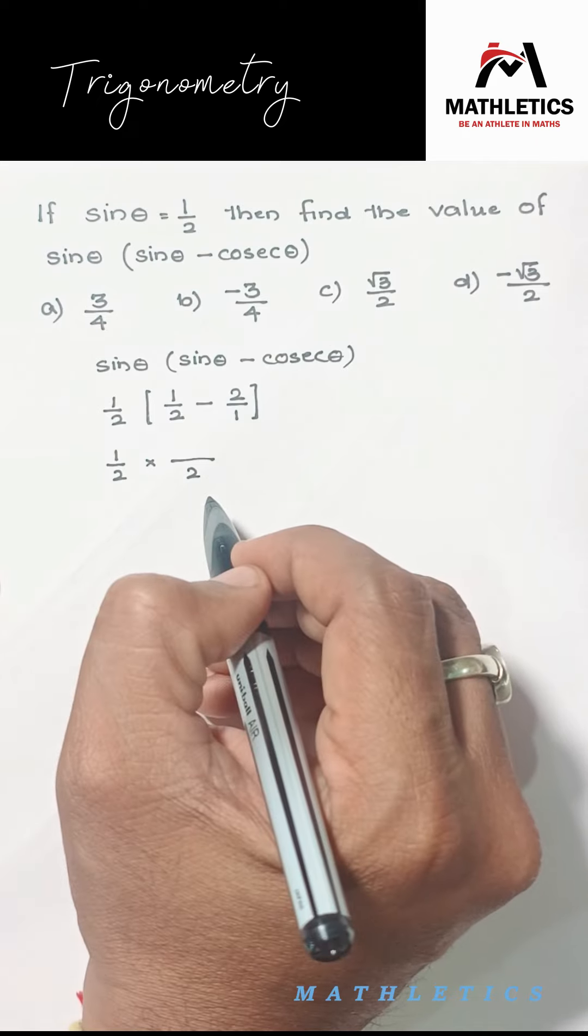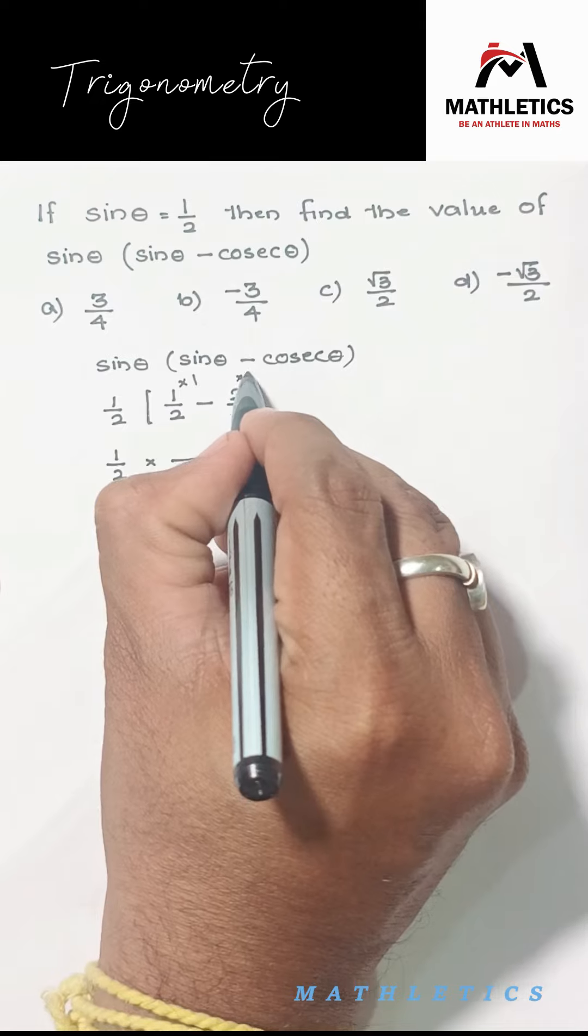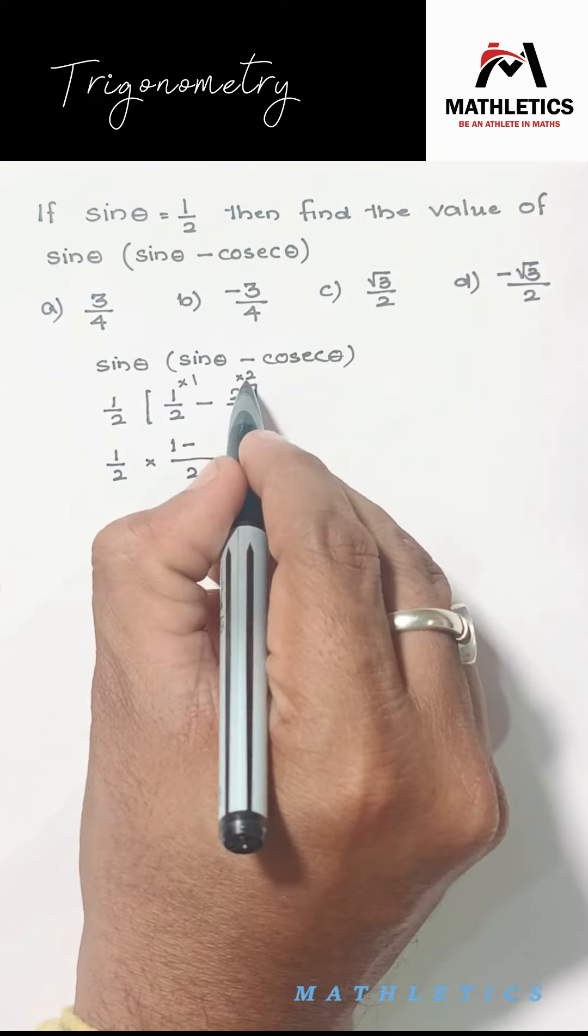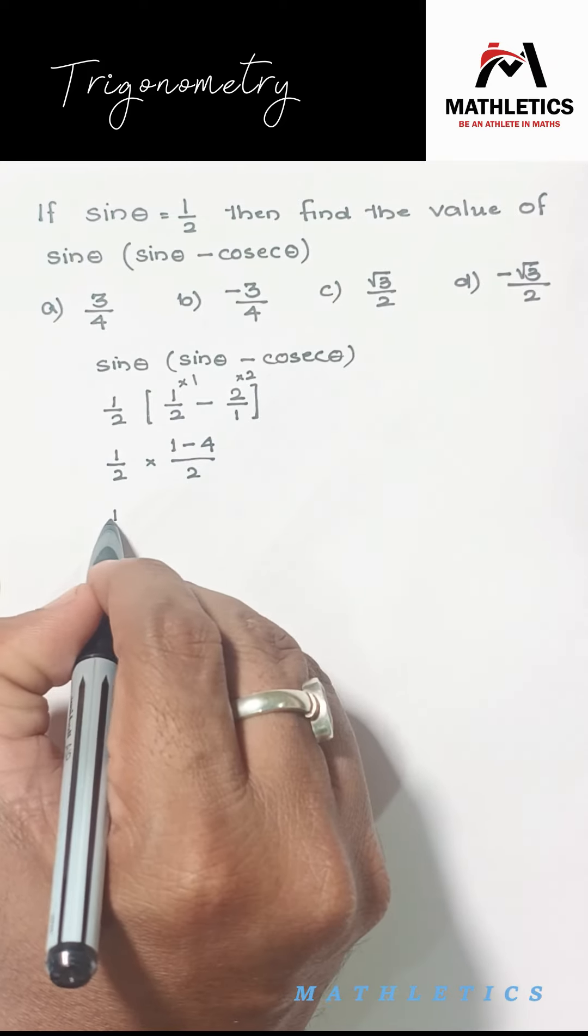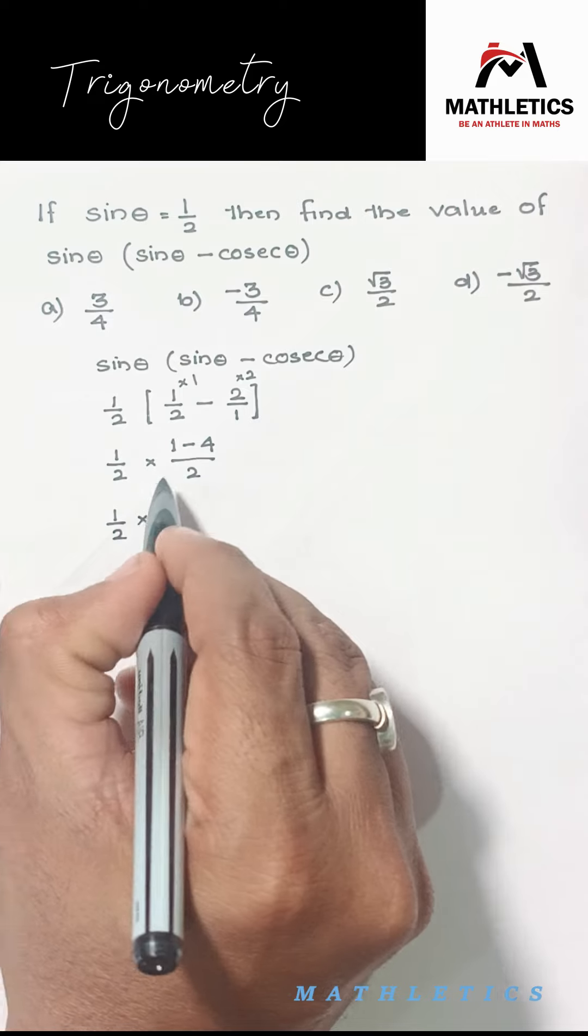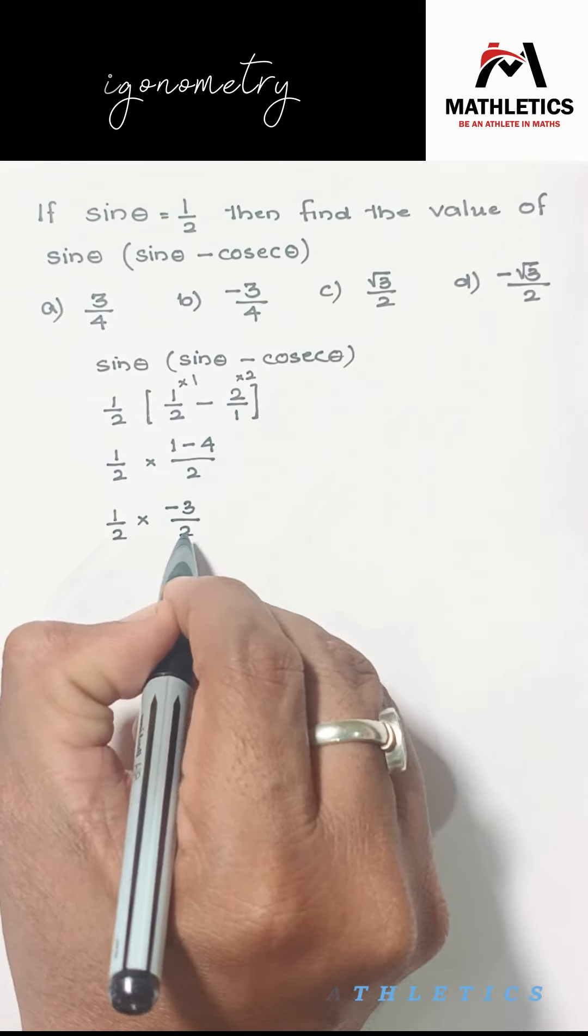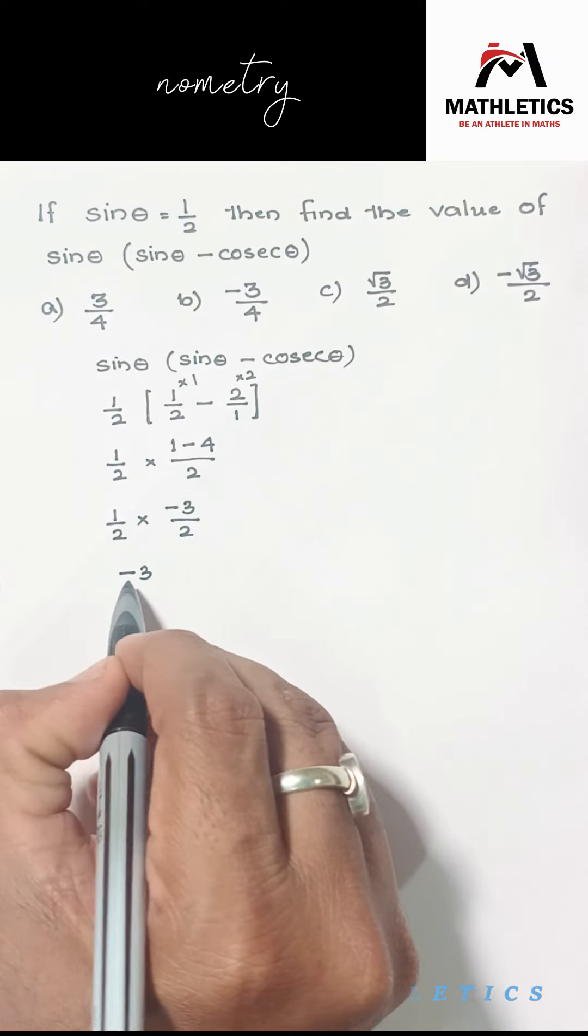Here I can write: two ones are 2, one twos are 2. So 1 × 1 is 1, minus 2 × 2 is 4. Now 1/2 as it is, so 1 - 4 is -3 divided by 2. We can easily multiply: 1 × -3 is -3, and 2 × 2 is 4.